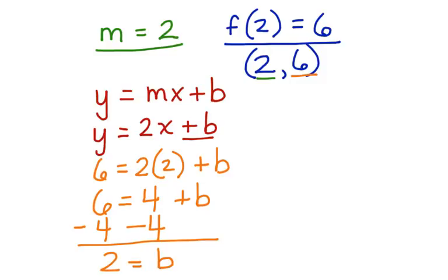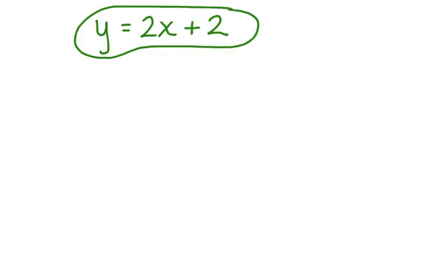We can subtract 4 from both sides of this equation and we get 2 is equal to b. Now we can go back and finish writing the equation. So we have y is equal to 2x plus 2. Here's our equation or our function in slope-intercept form.